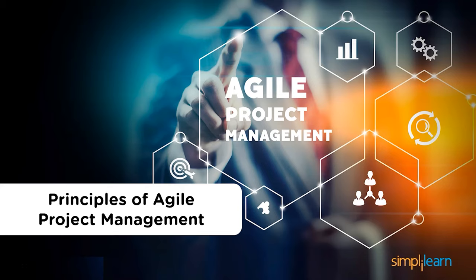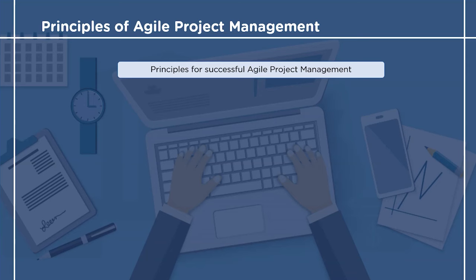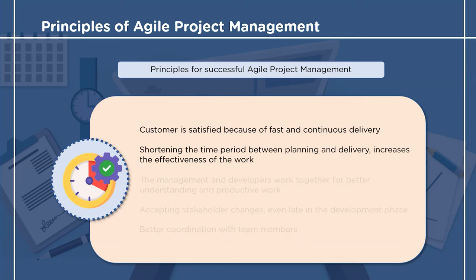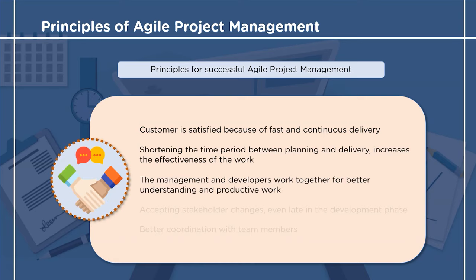Now we shall check the principles of agile project management. There are ten principles for successful agile project management. The first principle is the satisfaction of the customer by delivering the project fast and with the least number of errors. The next principle refers to decreasing the amount of time between the phase of planning and delivery.